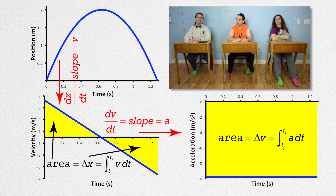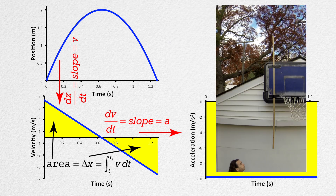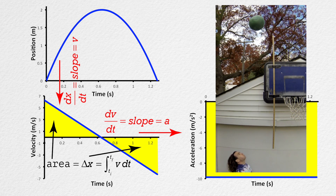It looks like the acceleration is constant at just less than 10 meters per second squared, so this is an object in free fall. The initial velocity is positive and the final velocity is negative, and in the middle the velocity is zero. So these graphs represent the motion of an object in free fall which was initially thrown upward. Yes, that is correct.